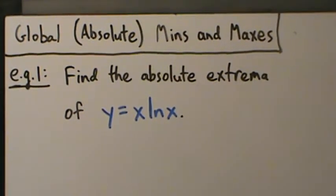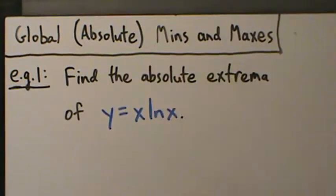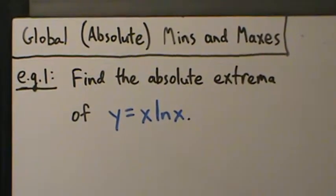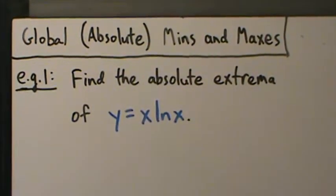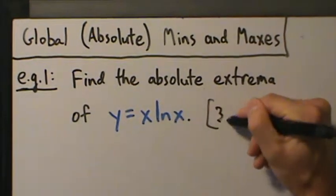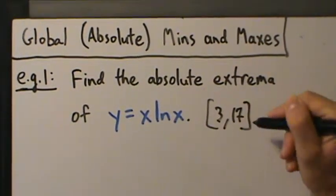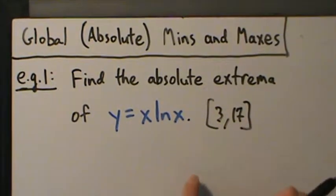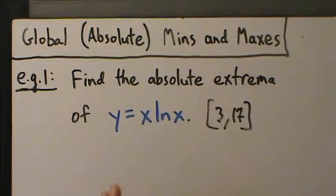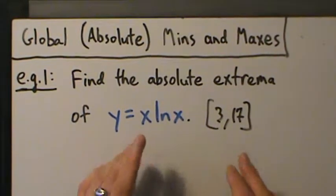In this video we're going to start talking about global or absolute min's and max's. In the last few videos we've been talking a lot about local min's, local max's, or relative — same thing — and we've been talking about using the first derivative test to find those. Now, when you do global or absolute min's and max's, usually you're going to look on a closed and bounded interval, maybe something like from 3 to 17. When you look for global min's on a closed bounded interval like this, it's actually a little bit easier — there's a shorter process. Doing that's a little bit easier than it is to find local min's and max's.